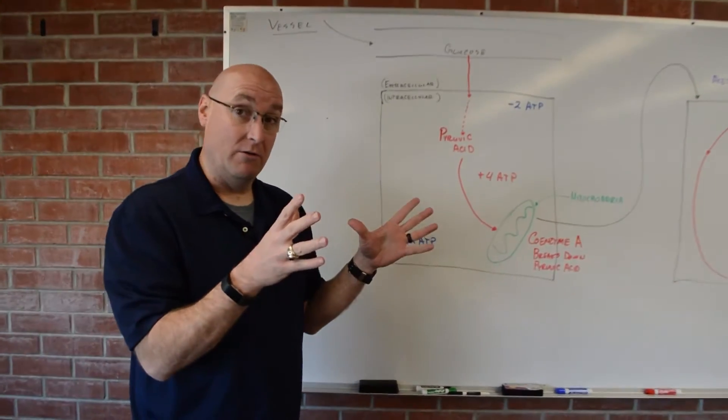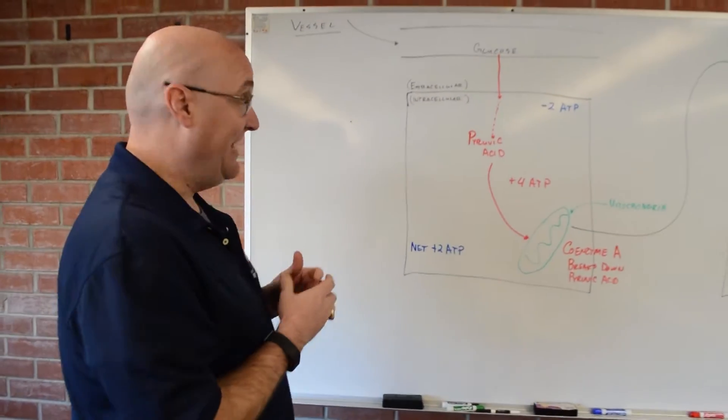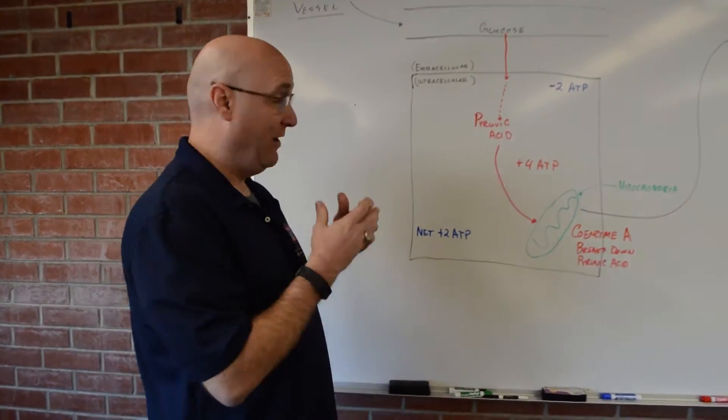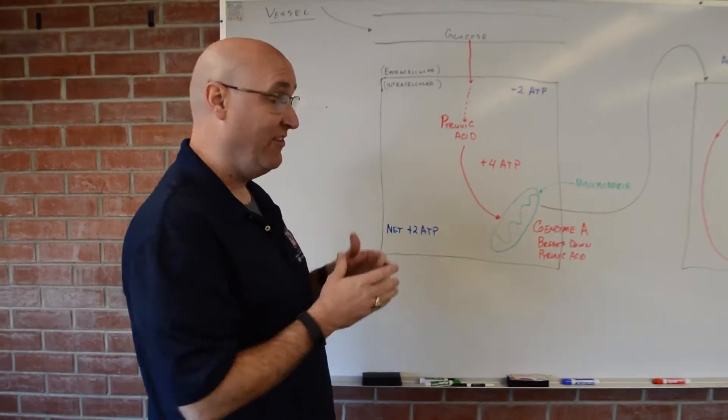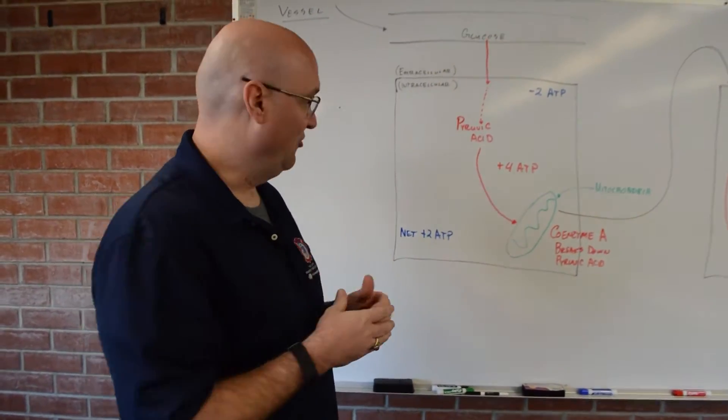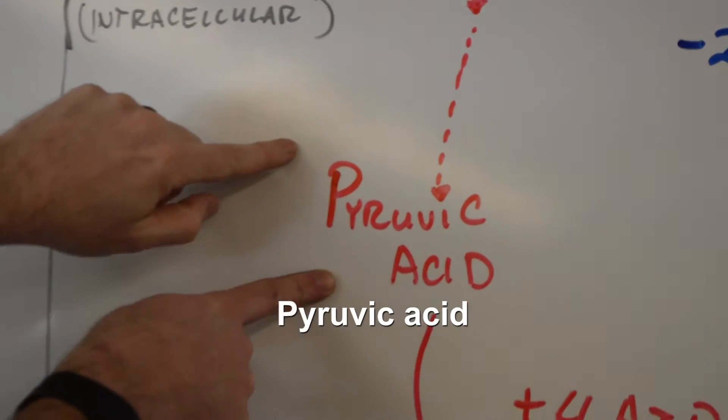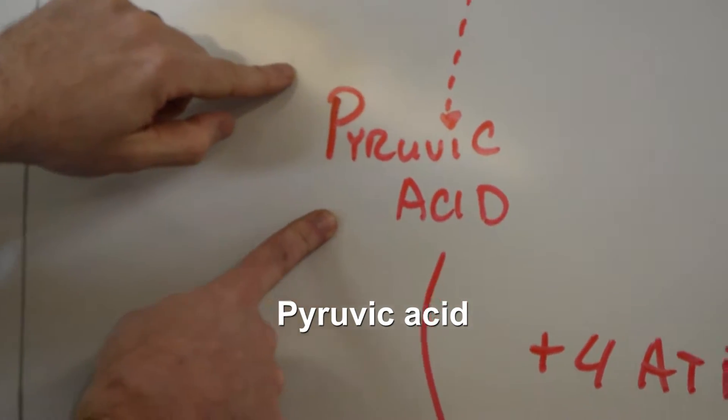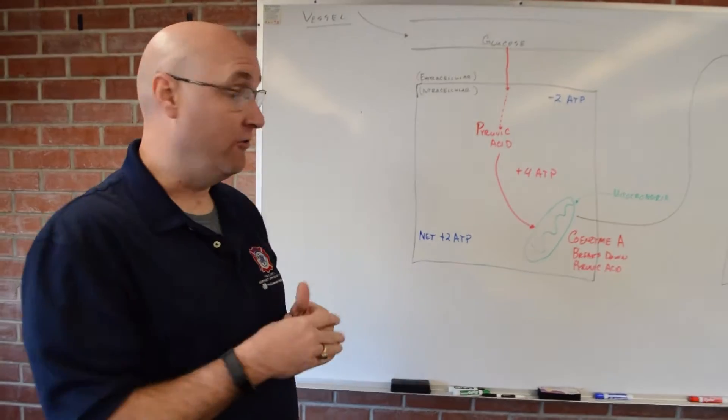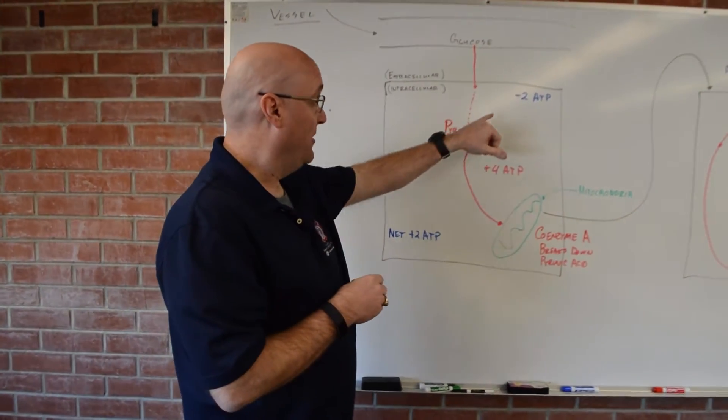So glucose is a big molecule. It's a big molecule and it needs help getting in the cell. We have things that help it get in the cell. But once it gets in the cell, it can't be utilized until it's broken down into something called pyruvic acid. And pyruvic acid is a smaller molecule that comes from glucose.